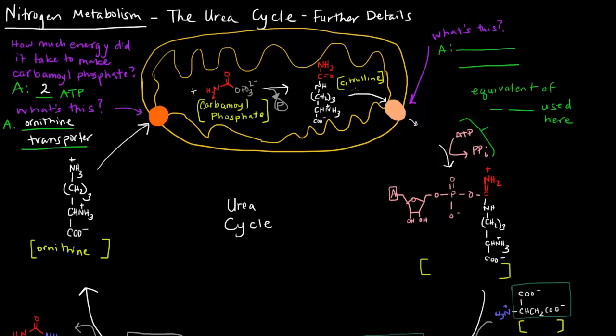Citrulline is in the liver mitochondrial matrix. It needs to leave and get into the cytosol. In order to do that, it needs this transporter here. That transporter is, of course, a citrulline transporter.